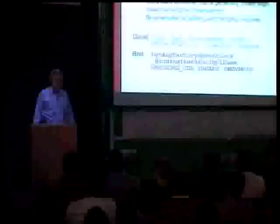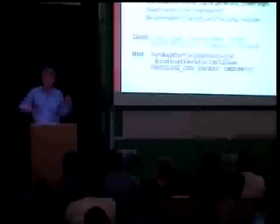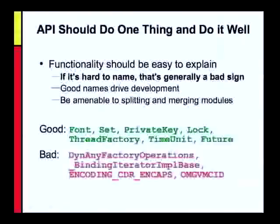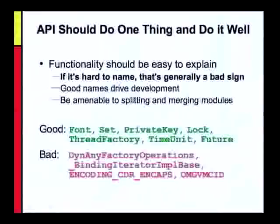What are the general principles of good API design? First, an API should do one thing and do it well. The functionality should be easy to explain — if it's not easy to explain, it's not doing one thing well, it's a mess. If you can't come up with a good name for it, it's a mess. The names are the API talking back to you, so listen to them. If you come up with complicated names like 'DynAnyFactoryOperations' or 'ORB_BindingIteratorInputBase' — which actually violates naming conventions — you've got problems. All of this comes from an actual Java platform API — and I won't tell you what it is except to say that it's CORBA.